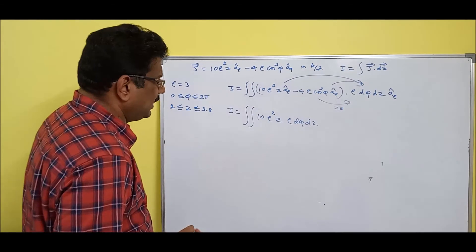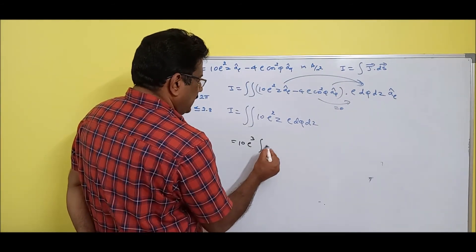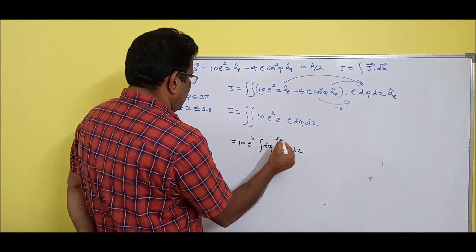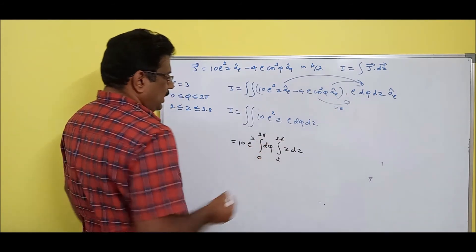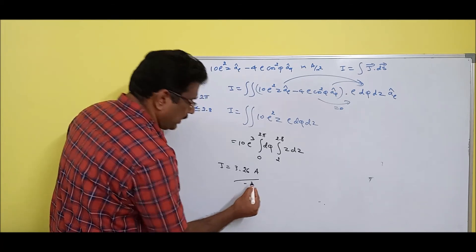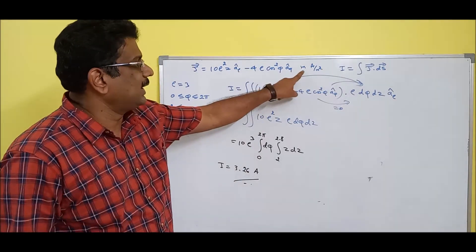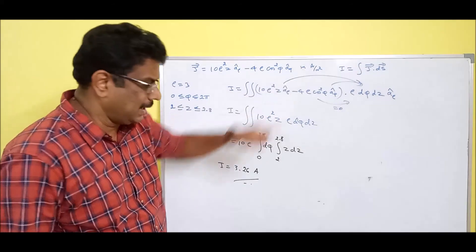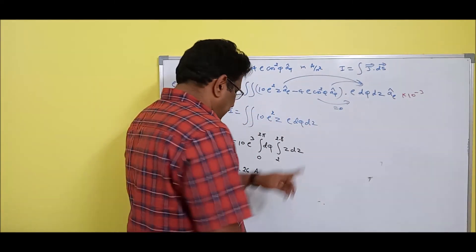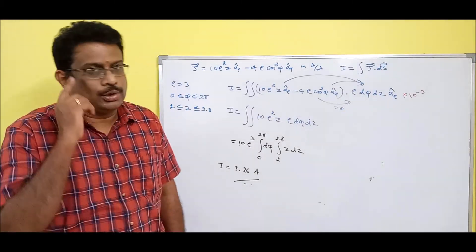One integration is for φ, the other for Z. With ρ equal to 3: 10ρ³ is 10 times 27 equals 10³ outside. Integrate dφ from 0 to 2π and Z dZ from 2 to 2.8. Substitute limits and integrate. Don't forget there is a milli factor (×10⁻³) in the current density. Including that, the final answer is 3.26 milliamperes. With this I conclude this session. Thank you.